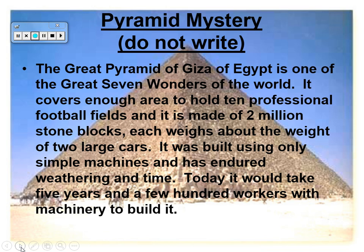You don't have to write this down — this is just giving you an example. The Great Pyramid of Giza in Egypt is one of the seven wonders of the world. It's big enough to hold ten professional football fields, and it's made of two million stone blocks. Each one of those blocks is equal to the weight of two large cars. However, when it was built, there were no machines like the ones we have now, so they would have had to use literally the six simple machines to build it. In class, we'll watch a video that shows how they think this might have happened.